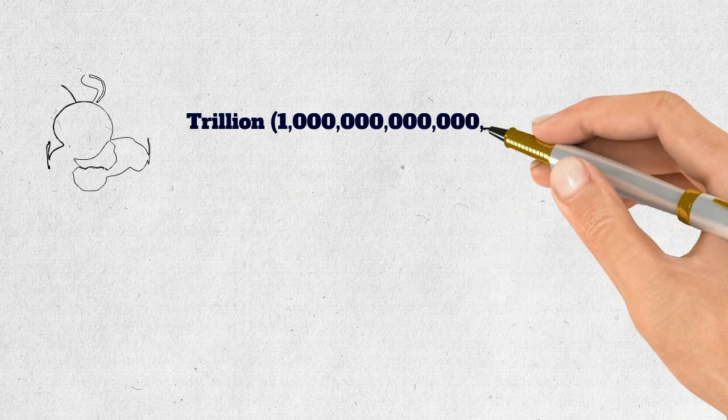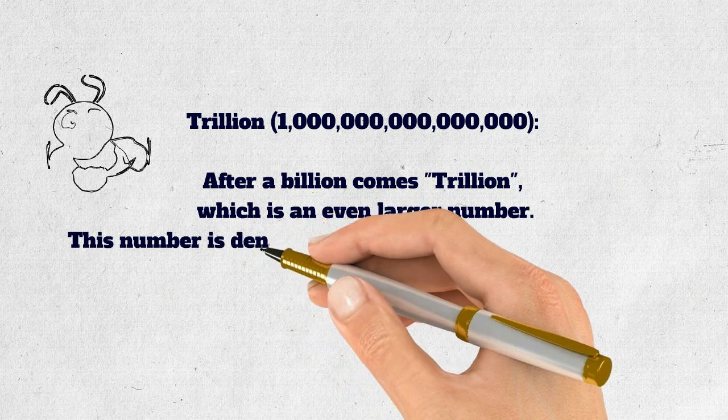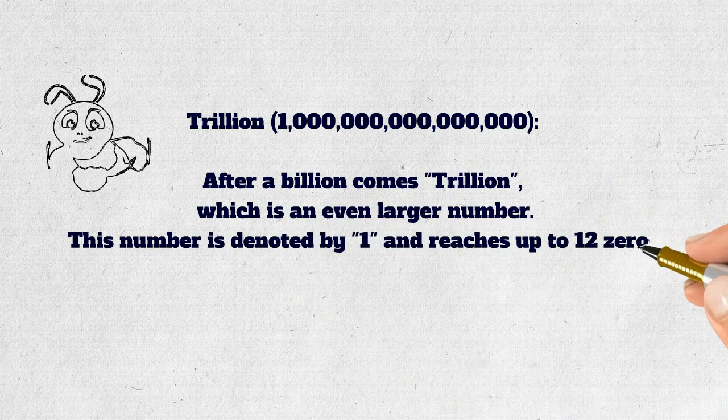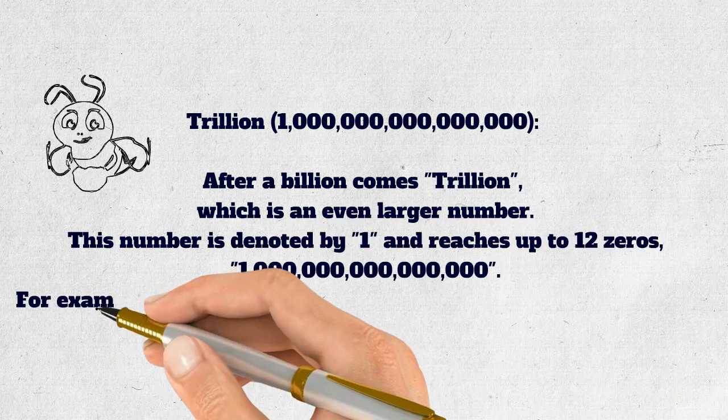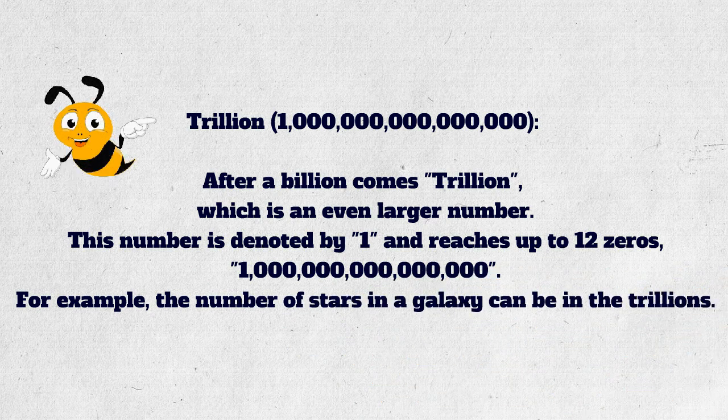Trillion. After a billion comes trillion, which is an even larger number. This number is denoted by one and reaches up to 12 zeros, 1,000,000,000,000. For example, the number of stars in a galaxy can be in the trillions.